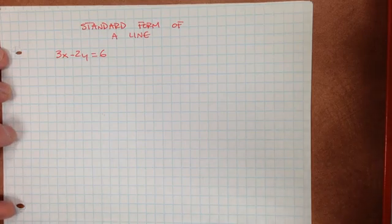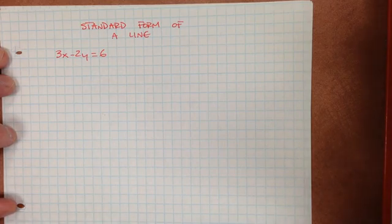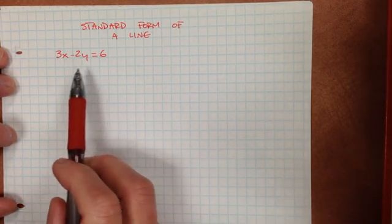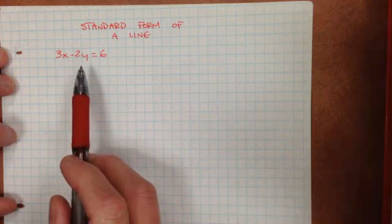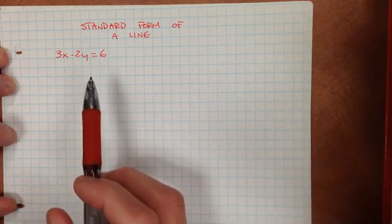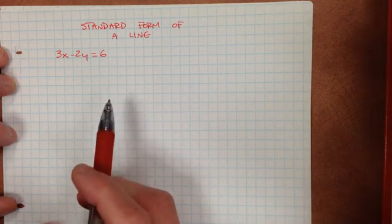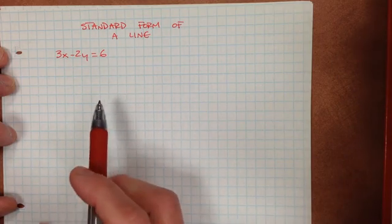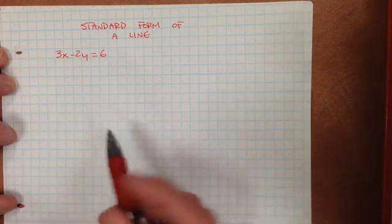Today we are going to continue to talk about a line specifically in standard form. As you can see, this equation right here has two variables, x and y. But unfortunately, this is not in y-intercept form — y equals mx plus b — so you could potentially have a little bit of a difficult time graphing it.